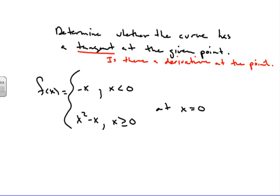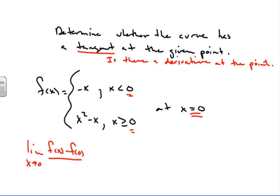To answer that, we have to understand what we're looking for. When we have a piecewise function like this, we're trying to figure out: does this piecewise graph at x = 0 have a derivative there? In order for this to be true, we have to have the limit — and we'll use the alternate form because it's easier here — as x approaches 0 of f(x) minus f(0) over x minus 0, and this limit has to exist.